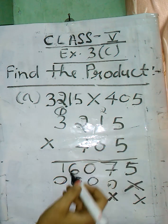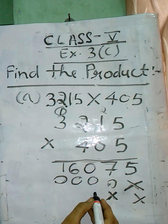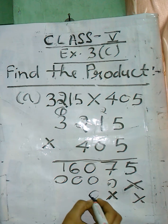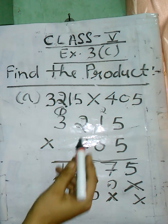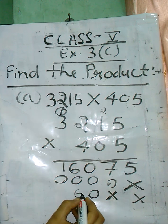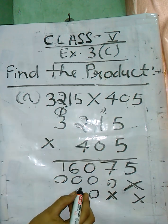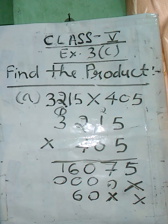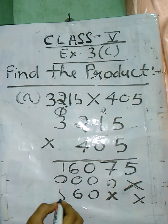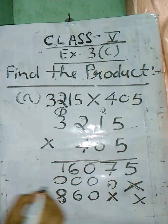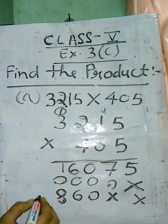Now 4 into 5 is 20. Write 0 at ones place and 2 carry forward on tens place. 4 into 1 is 4, plus 2 carry is 6. Then after, neither any carry over on hundreds place, 4 into 2 is 8, single digit number. 4 into 3 is 12.